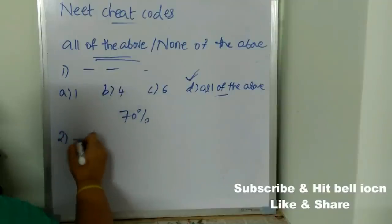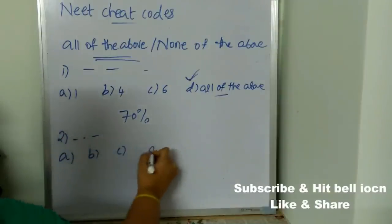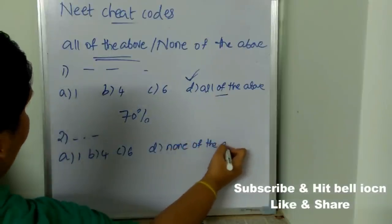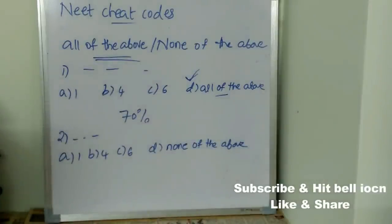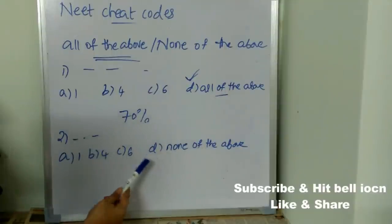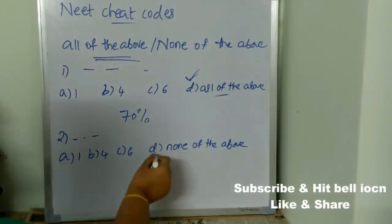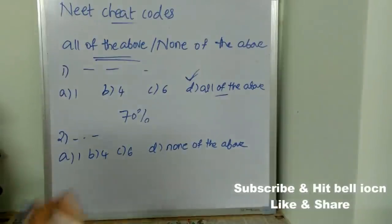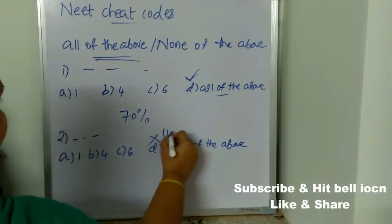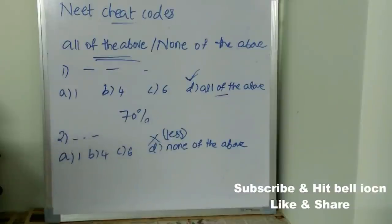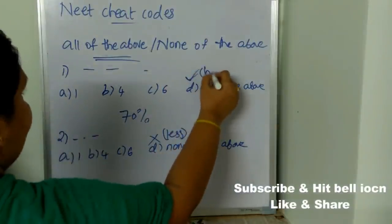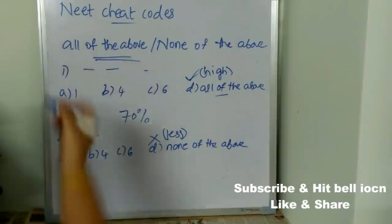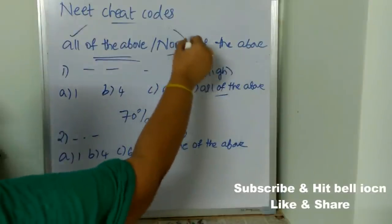For another question where options are 1, 4, 6, and 'None of the above' — if you don't know the correct answer, do not choose 'None of the above.' There is very low probability it is correct. In summary: if you see 'All of the above,' go for it; if you see 'None of the above,' don't go for it.